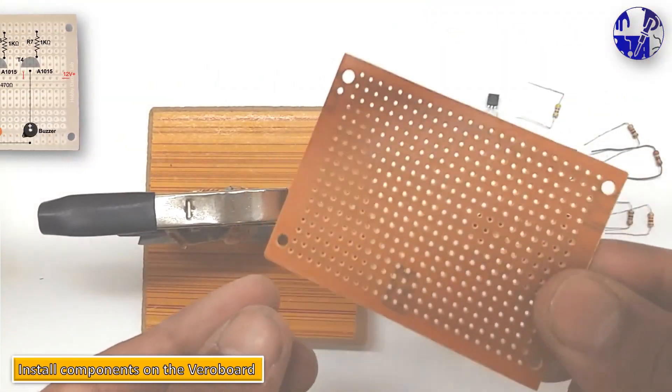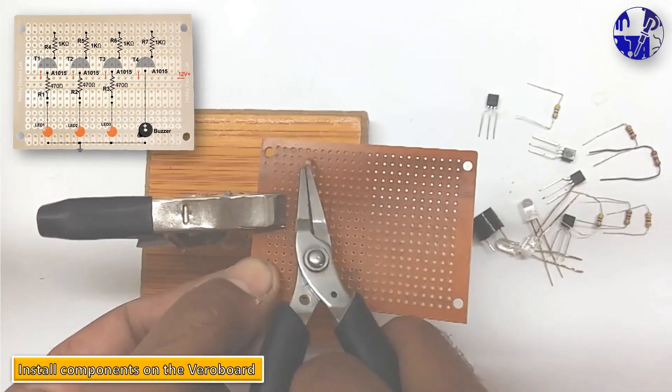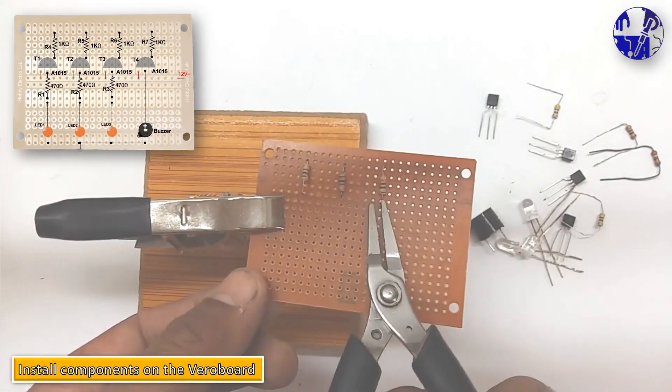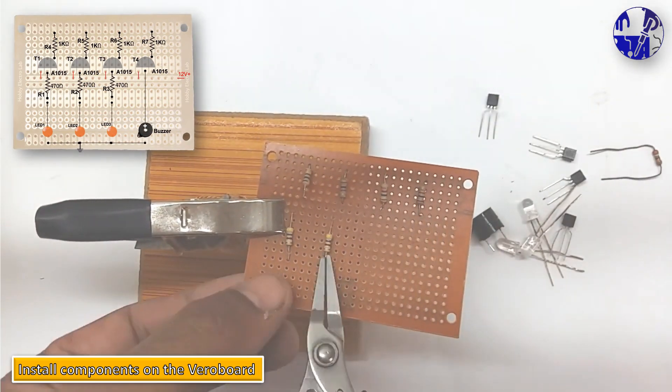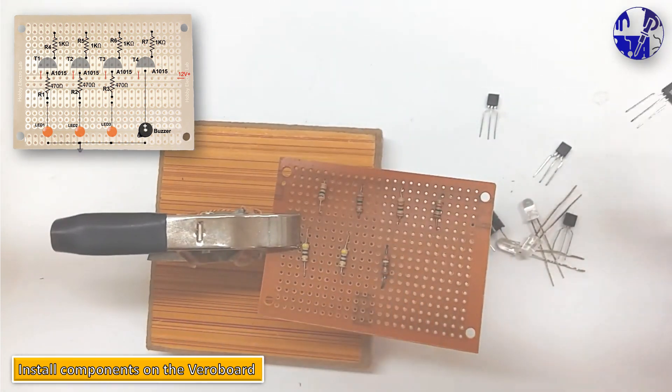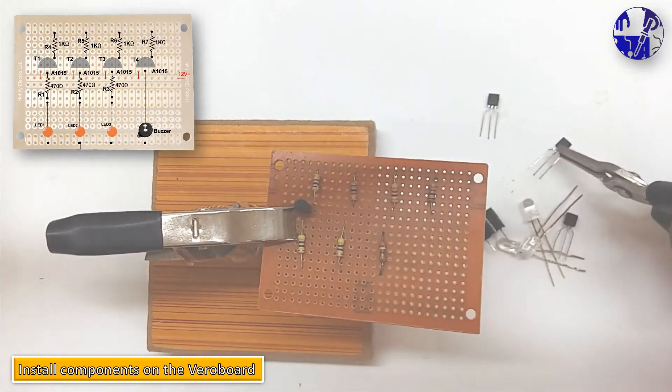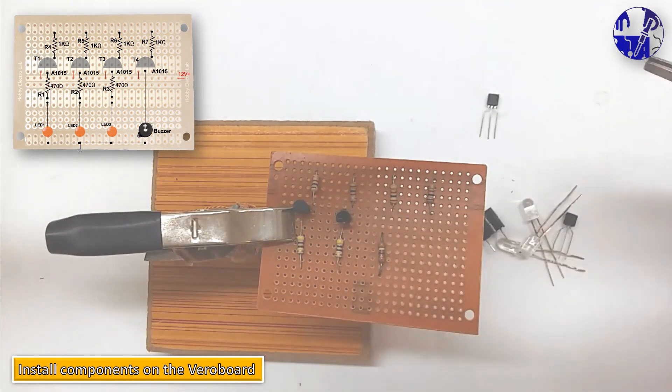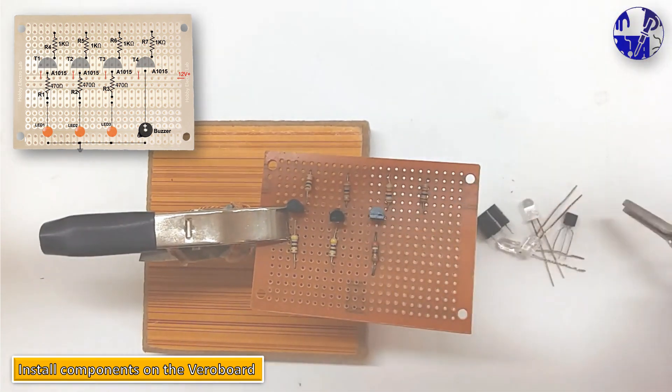For implementing a simple water level alarm circuit, we used easily available general purpose PNP transistor. This circuit indicates various levels in a water tank. This circuit is designed to detect low, mid, high, and max levels of water in the tank.